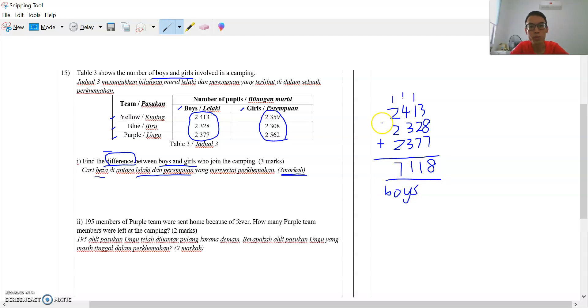Then we also need to add up all the girls. So the first one is 2,359, 2,308, 2,562. 8 plus 2 is 10, 10 plus 9 is 19. 1 plus 5 is 6, 6 plus 6, 12.